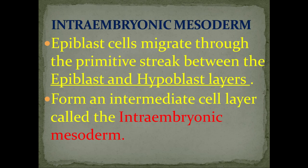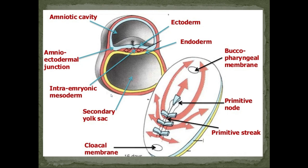Next is the intra-embryonic mesoderm. The epiblast cells migrate through the primitive streak between the epiblast and hypoblast layers, forming an intermediate layer known as the intra-embryonic mesoderm. In this diagram you can see the amniotic cavity, secondary yolk sac, ectoderm, and endoderm — the cells from the ectoderm migrate to form the intra-embryonic mesoderm. The mesoderm is absent at two areas: where the buccopharyngeal membrane is — the future mouth — and at the cloacal end.